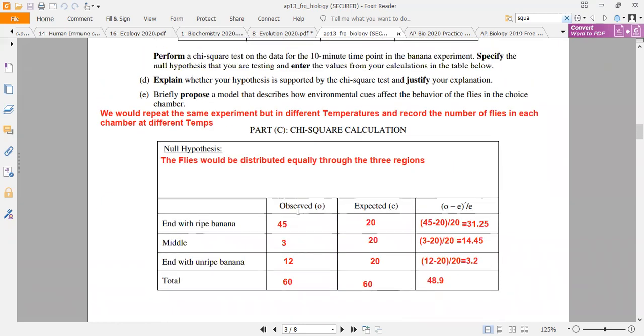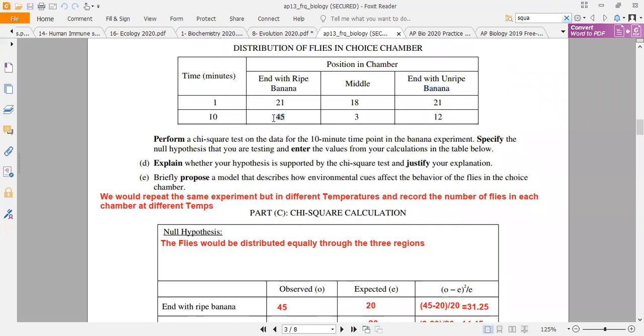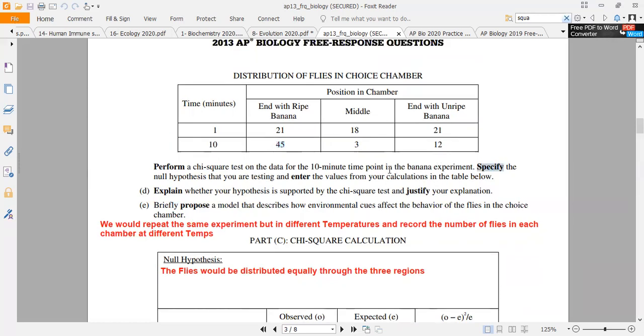I will explain the table below and the observed values which I have seen in the experiment. The observed values are 45, 3, and 12 individuals in the experiment.